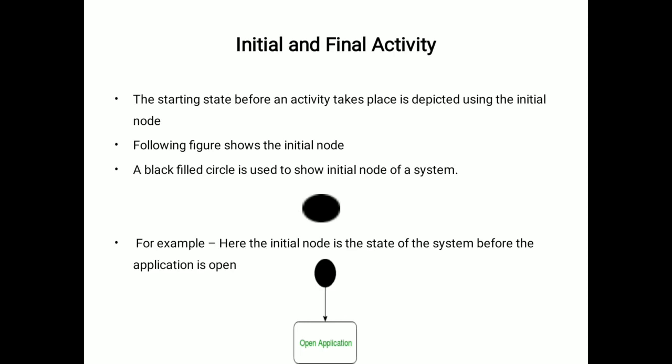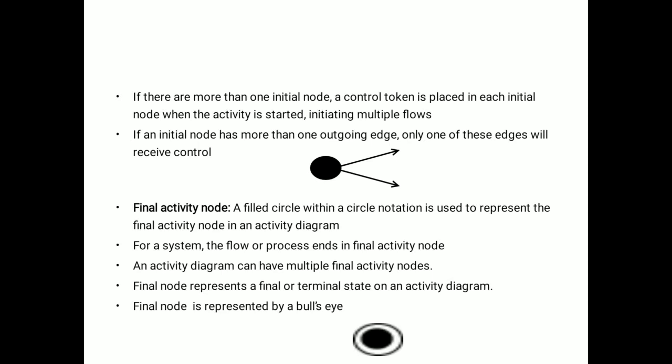If there are more than one initial node, a control token is placed in each initial node when the activity starts, initially multiple flows. If an initial node has more than one outgoing edge, only one of these edges will receive control.